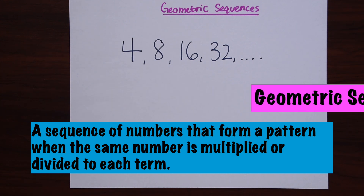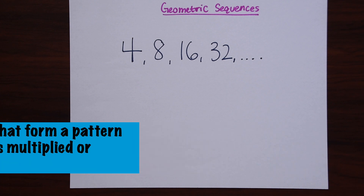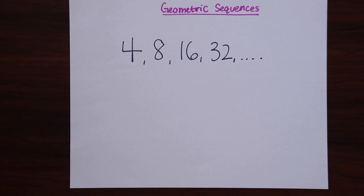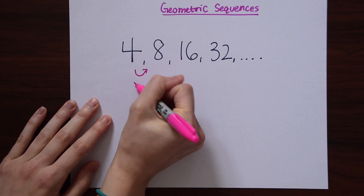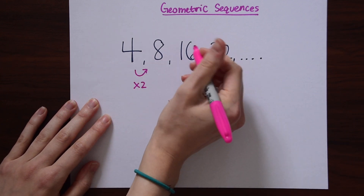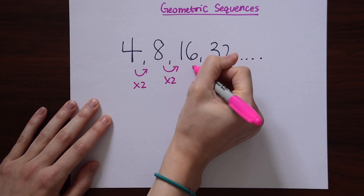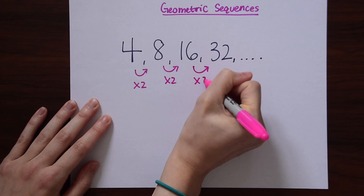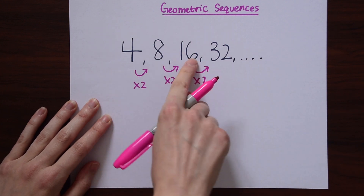So we have this example here. If you look at how these numbers are related to each other, we have the sequence 4, 8, 16, 32. If you look at how 4 is related to 8, notice that 4 times 2 is equal to 8. 8 times 2 is equal to 16. 16 times 2 equals 32. So notice we're multiplying 2 to each term.